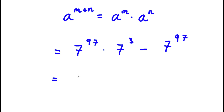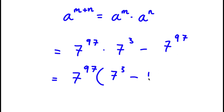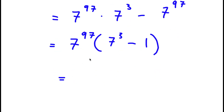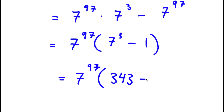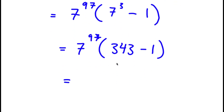From here, if I factor out 7 to the power of 97, I get 7 to the power of 97 times the quantity 7 to the power of 3 minus 1. Now 7 to the power of 3 is 343, so I have 7 to the power of 97 times 343 minus 1. And 343 minus 1 is 342, so my answer is 342 times 7 to the power of 97.